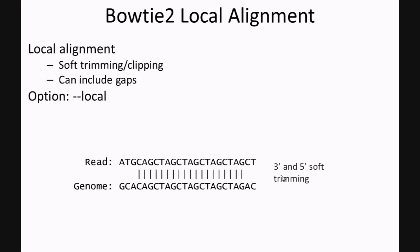The other alignment option of Bowtie 2 is local alignment. This is similar to how the original Bowtie would perform read alignment. However, Bowtie 2 will perform soft trimming or clipping of reads, as well as include gaps in the alignment. In this example, I'm showing a case where a read has both 5' and 3' trimming.